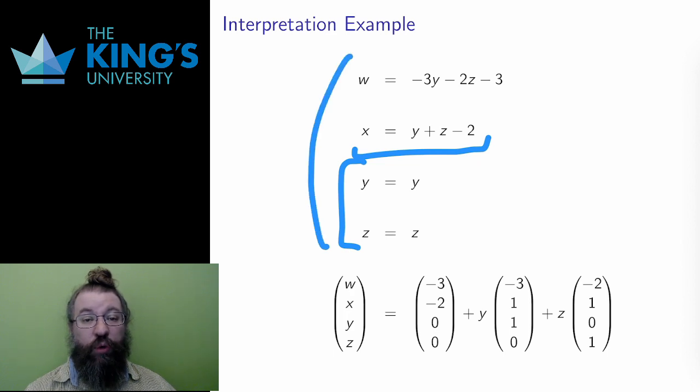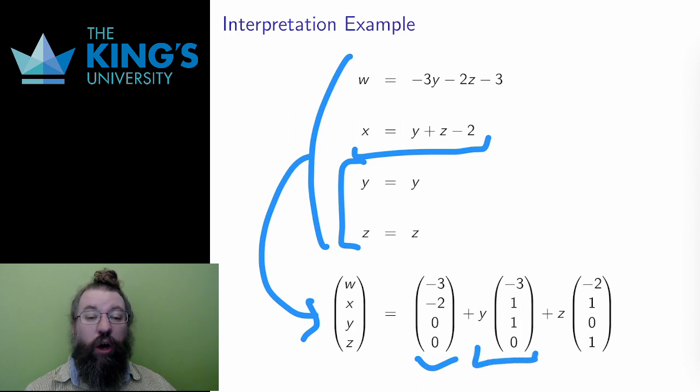And again, I write these four equations as the components of a vector equation, and I see that the points in the solution w, x, y, z are determined by an offset vector, negative three, negative two, zero, zero, plus any multiple of negative three, one, one, zero, and then also plus any multiple of negative two, one, zero, one. This is a two-dimensional affine subspace, a plane in R4 as the solution space for this system.